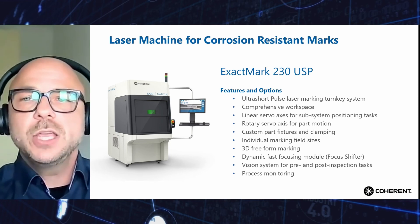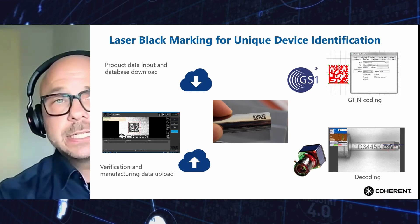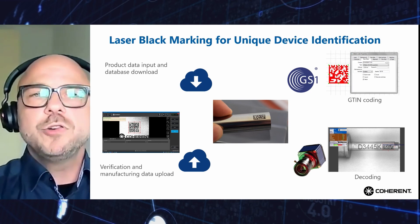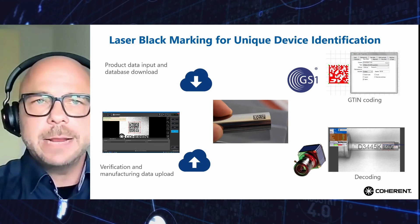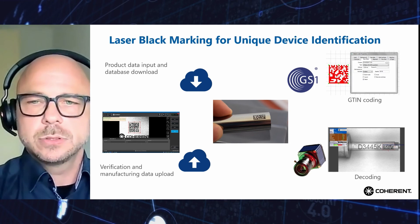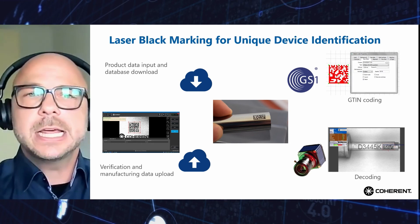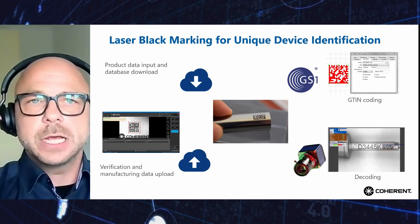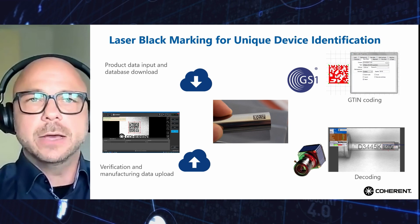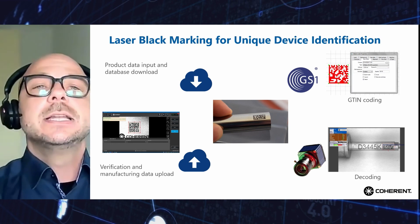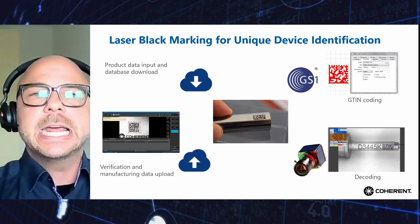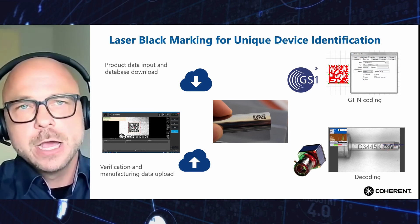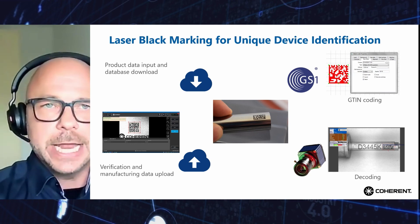In the context of the Unique Device Identifier — an authority-mandated solution — product data input comes from a database. We read the global trade item number (GTIN) to be used, which is coded according to GS1 in a data matrix code (DMC-S2 or rectangular format). After marking with the picosecond laser, a vision system reads and verifies the coding content of the marked data matrix code. This verified data is uploaded back into the original database, creating a closed-loop safety check.